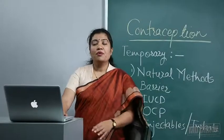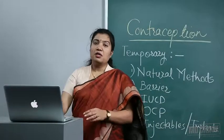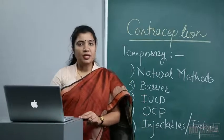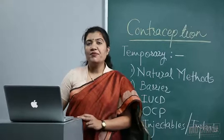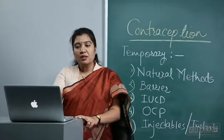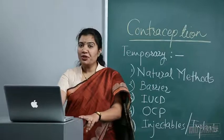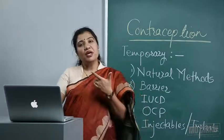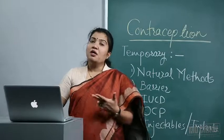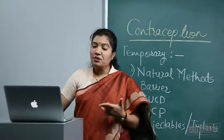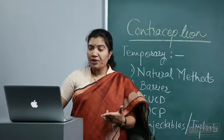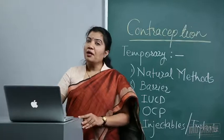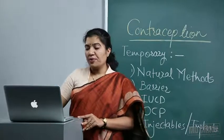Welcome back students. We were looking at IUCDs and had just seen the contraindications for intrauterine contraceptive devices. The list is big, but remember key ones: patients with irregular or heavy bleeding, PID, uterine anomaly, or heart disease — as it increases the chance of endocarditis — and nulliparous and unmarried women.